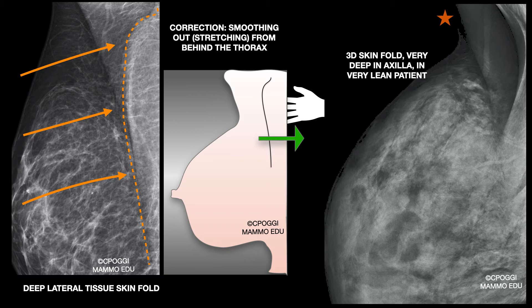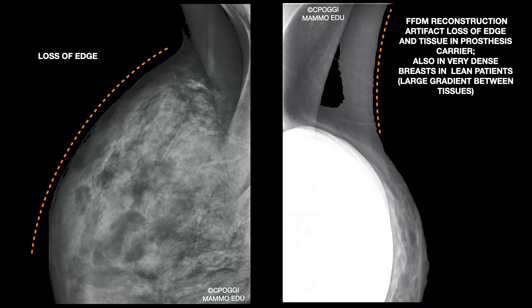If the patient is very lean but the breast is big and very dense, in addition to an important 3D fold, you could also see another artifact shown here by the stars. The artifact implies a loss of the skin edge. It is easy to see when there is an important thickness and density gradient — as happens in a very lean patient with a very dense breast, or in a prosthesis carrier. Here there is a loss of inner tissue too, for the same reason.